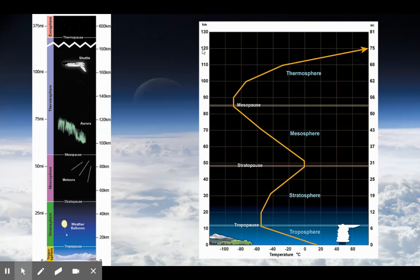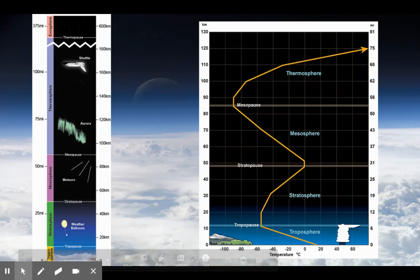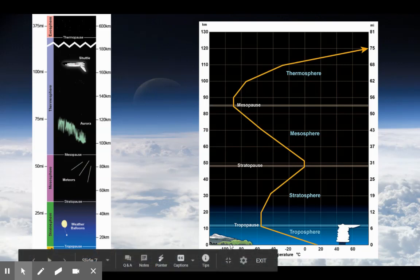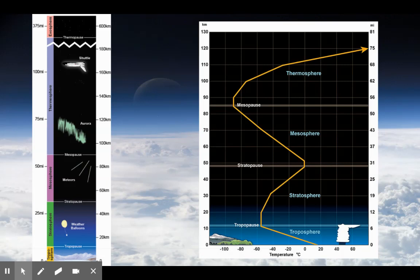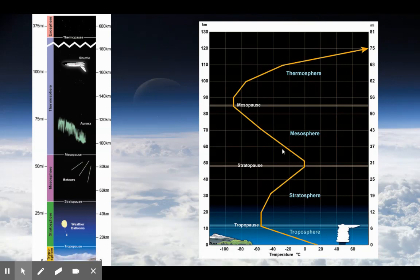Here's a chart with the Earth's surface at the bottom, and height increasing up to 130 kilometers. Looking at the temperature scale, as you go higher up to about 10 kilometers, temperature is dropping — that's the troposphere. Then you enter the tropopause, the boundary between the troposphere and stratosphere. Once in the stratosphere, temperature begins to increase again. In the mesosphere, temperature drops. In the thermosphere, temperature increases again.